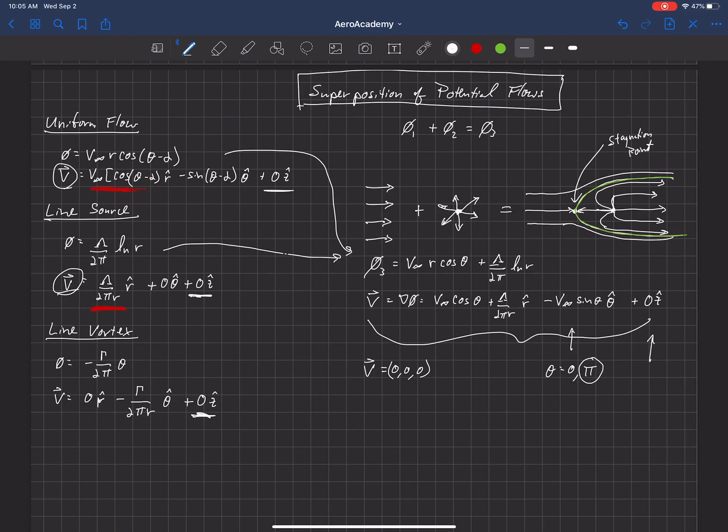So now let's look at this first term here. We need that to be equal to 0. So let's write it out. V infinity times cosine of theta, which is π, plus lambda over 2π r, and we want that to be equal to 0. So we're trying to find r, the distance from the origin where the stagnation point is.